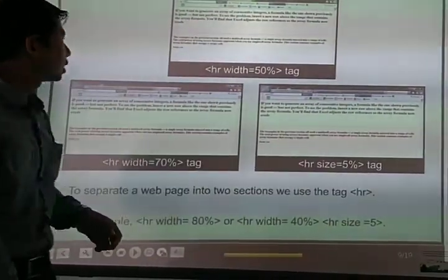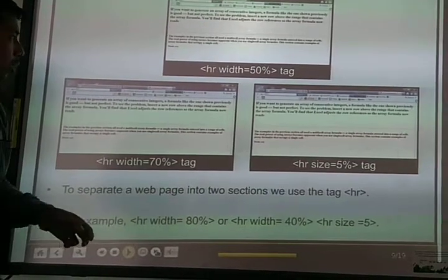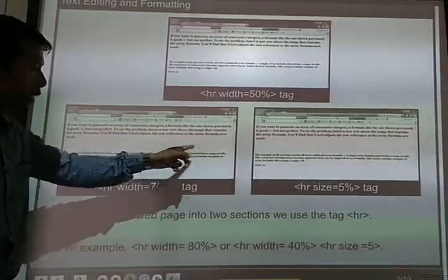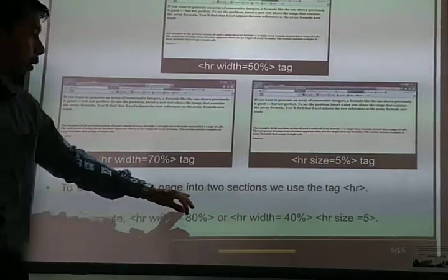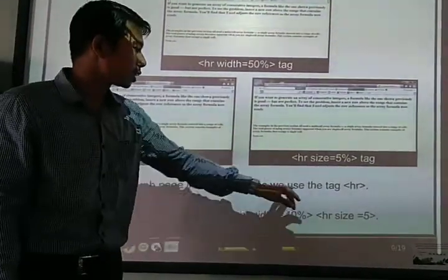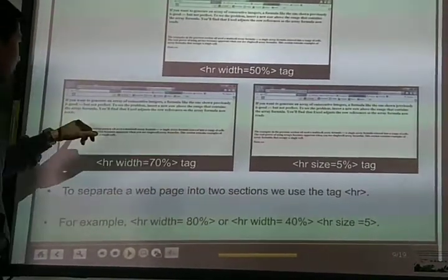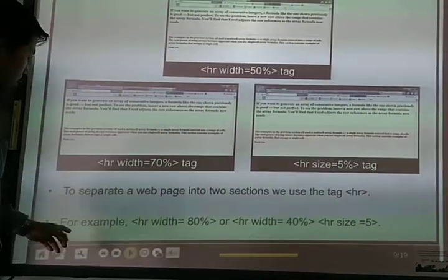HR is used to make a horizontal rule. To give an underline, to separate a webpage into different sections, you can use the HR tag. HR tag is used to give a line. For example, HR width.